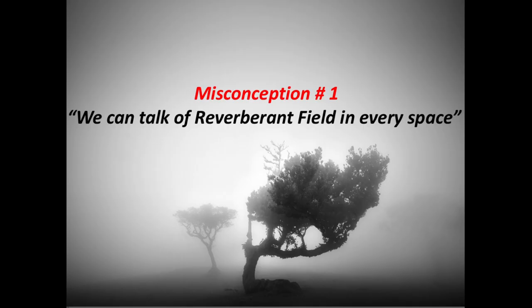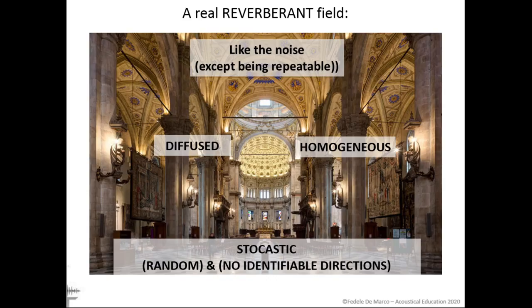Misconception number one: we can talk of reverberant field in every space. Well-defined geometric reflections, or a lot of reflections, are often confused with the more complex concept of reverberant field. Many believe that in every space a proper reverberant field can be defined. When we talk about reverberant field, we are talking about the real reverberant field — that is, diffused, homogeneous, stochastic (meaning random), with no identifiable directions.